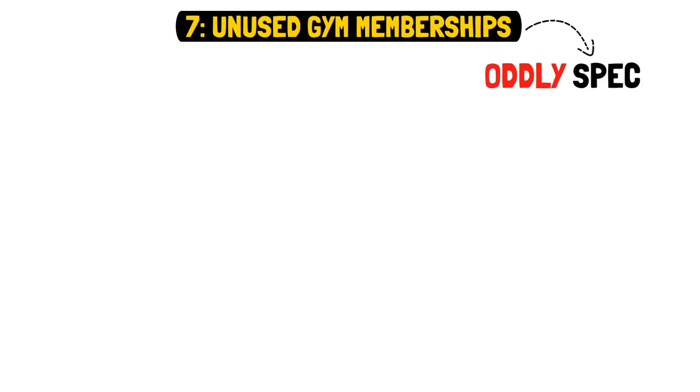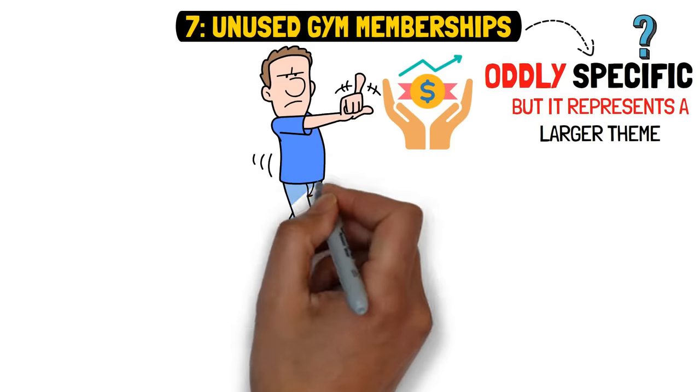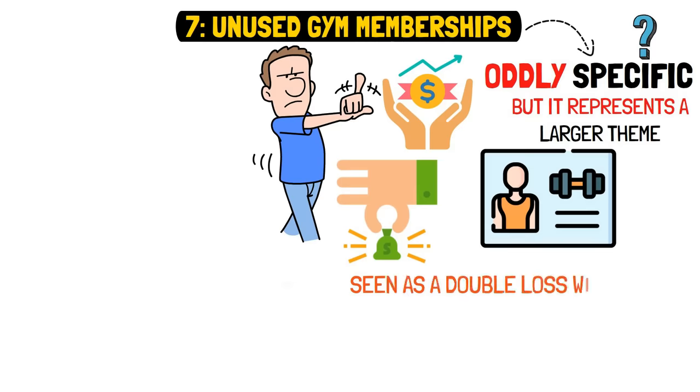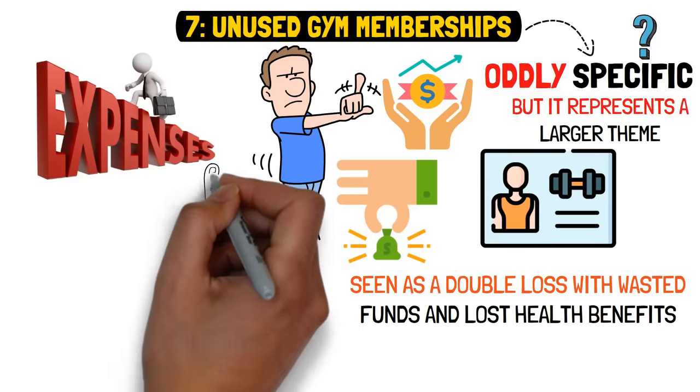Seven, unused gym memberships. It sounds oddly specific, doesn't it? But it represents a larger theme, value for money. Wealthy people don't pay for things they don't use, regardless of how small the expense might seem. This principle extends to gym memberships they rarely use, seen as a double loss with wasted funds and lost health benefits. They recognize that these lingering expenses represent neglected opportunities, not just in financial terms, but in the failure to capitalize on personal health and well-being.